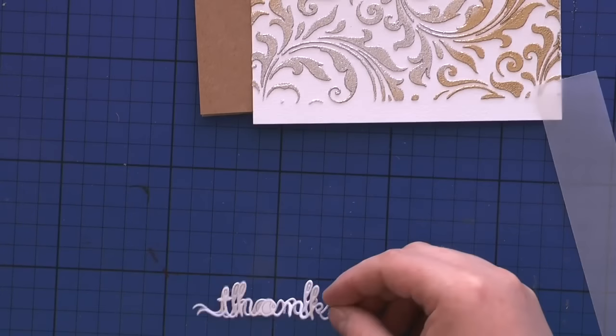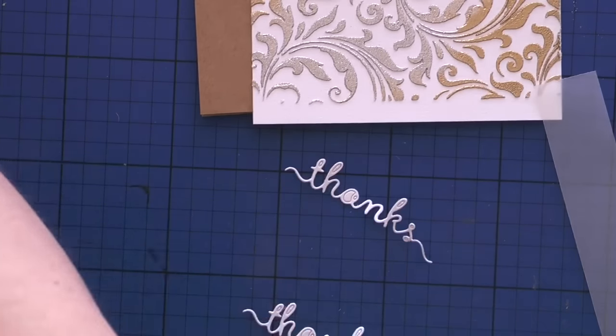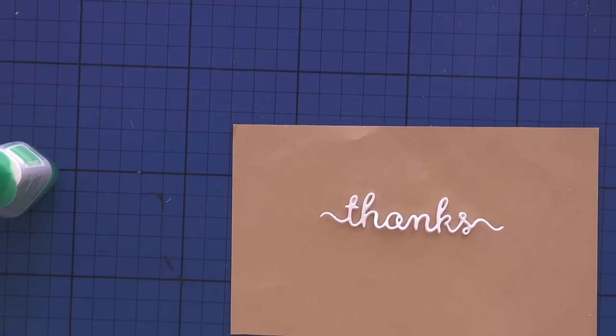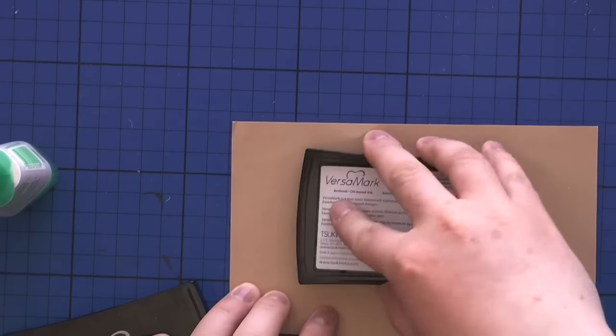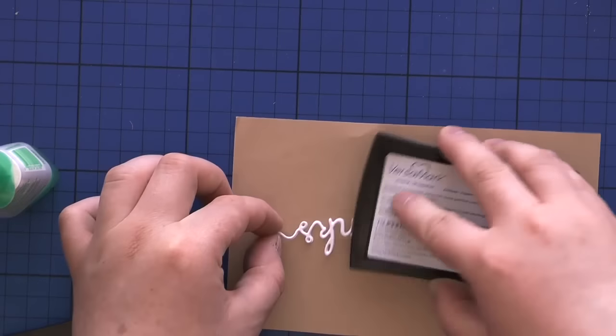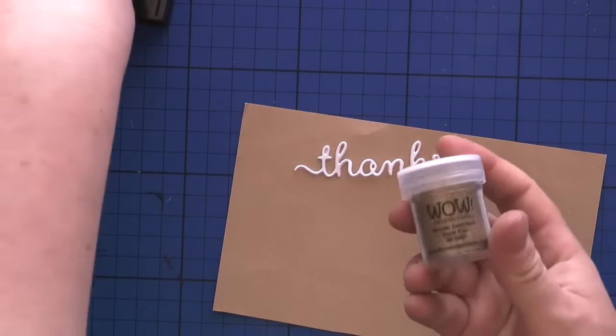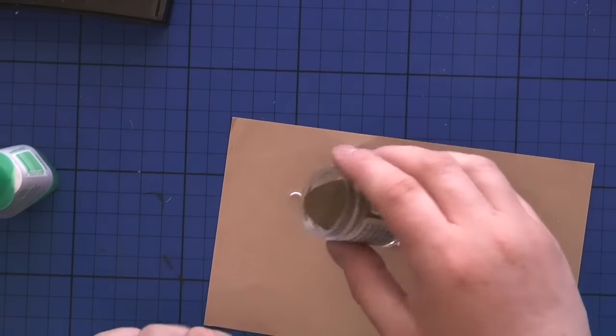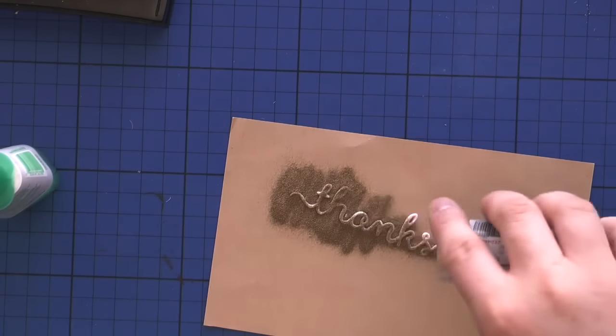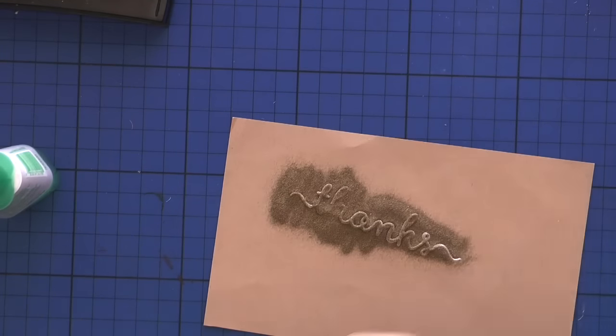I die cut the two words 'thanks' from Clearly Besotted and added them on top of each other, which was a bit of work but eventually worked out because it's a very tiny die cut. I'm going to cover the whole die cut with gold embossing powder by WOW and heat set it.